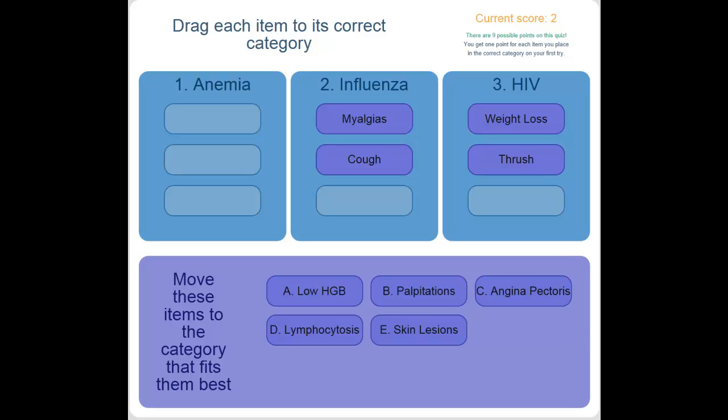to assist screen readers and screen magnifiers to help blind and low-vision students. Read item A. Low HGB. Read item B. Palpitations. Read column title 2. Influence. Read column title 1. Anemia. That concludes this brief demonstration.